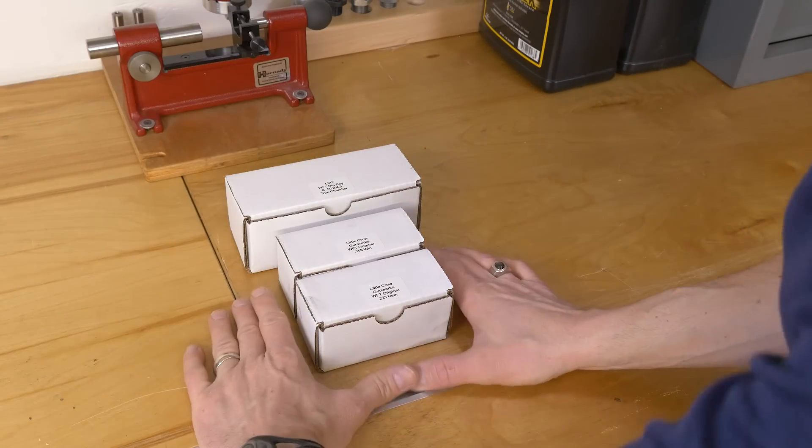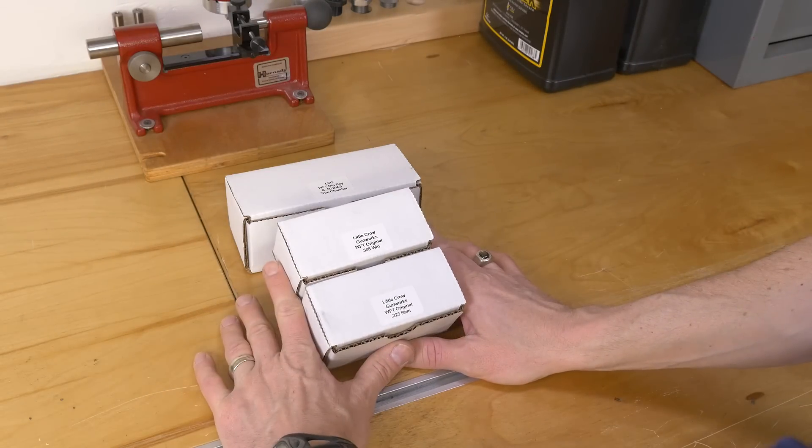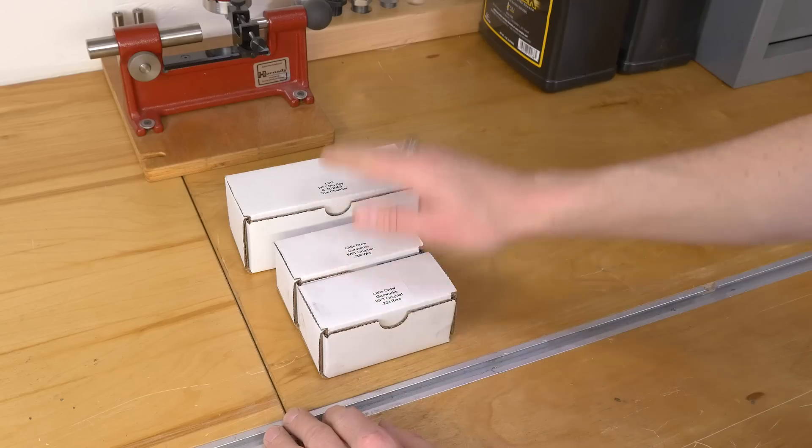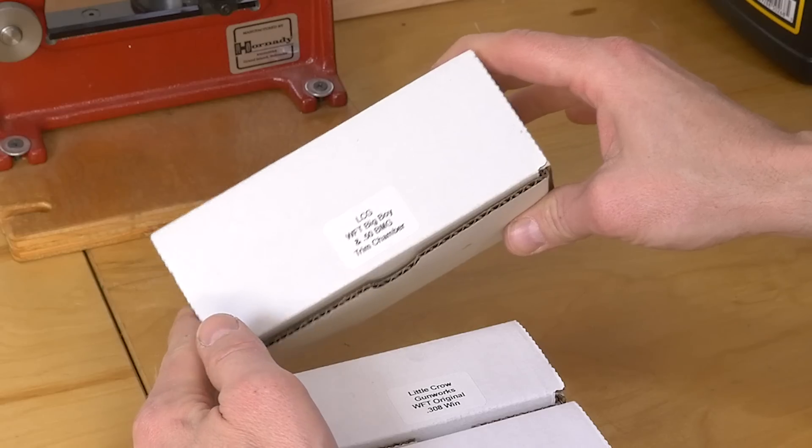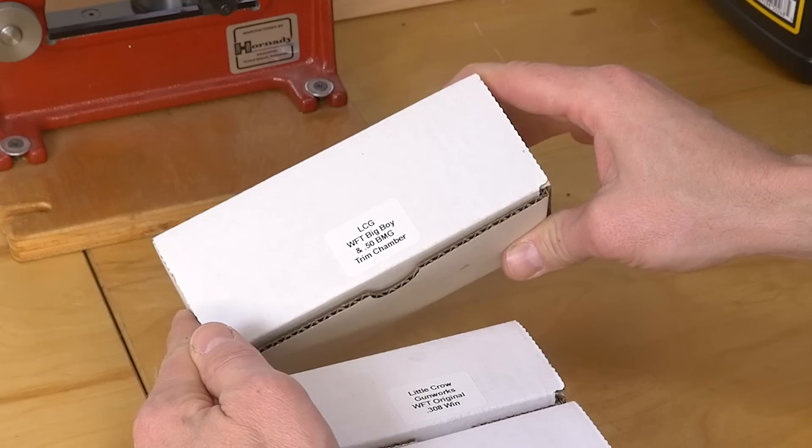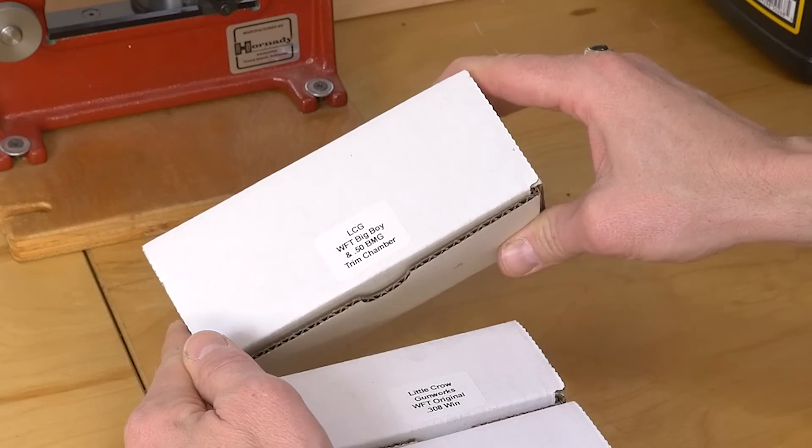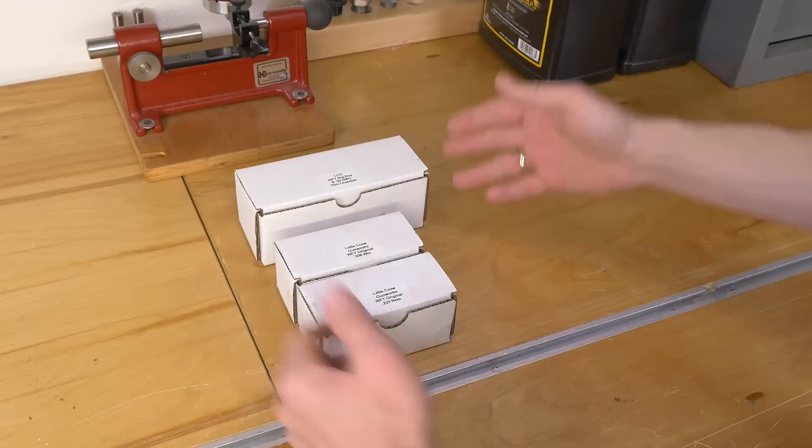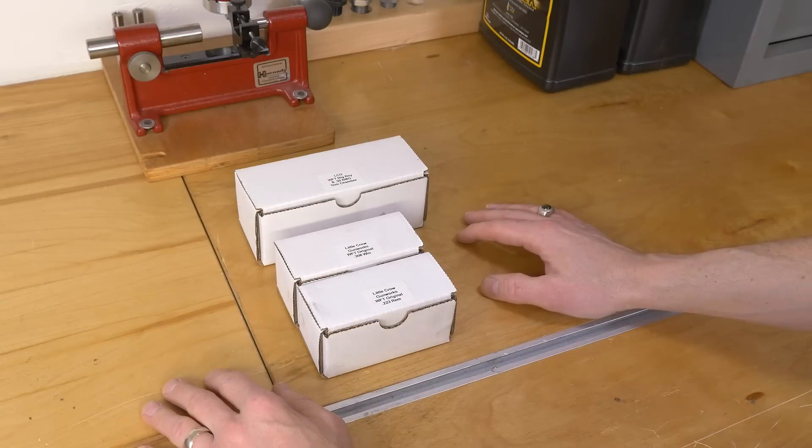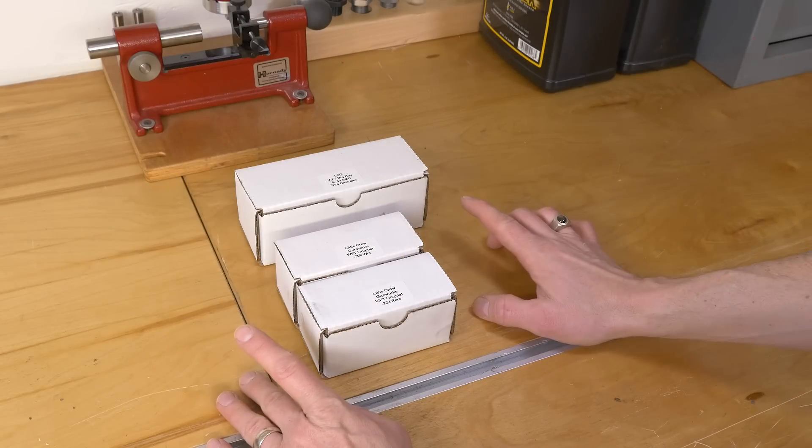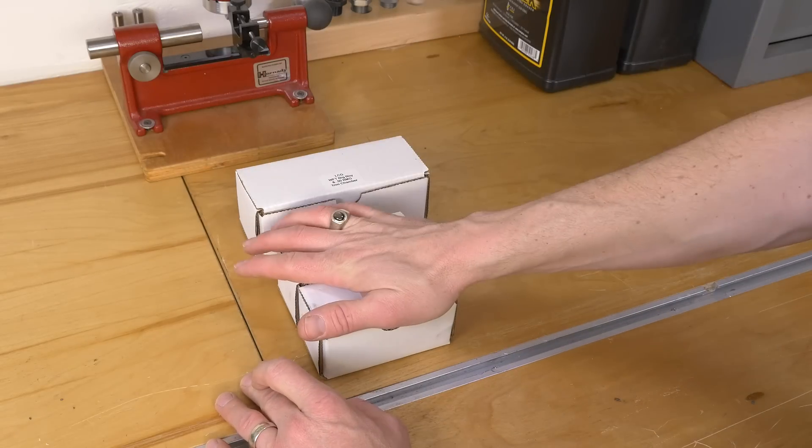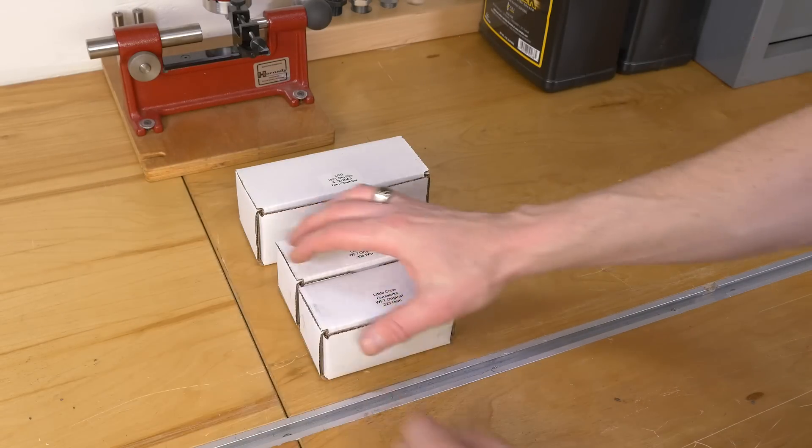Okay, so let me show you what I've got here. I've got a couple of the World's Finest Trimmer Original Edition trimmers here. I've also got the World's Finest Trimmer Big Boy which is for large cartridges and uses interchangeable inserts so that you can trim different cartridges with the same body. I will note that Little Crow Gunworks just released the World's Finest Trimmer 2 which brings that interchangeable insert format to the smaller bodies. So perhaps I'll show that later.